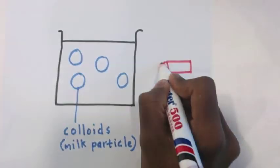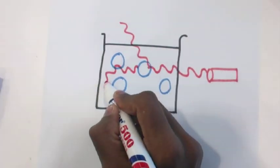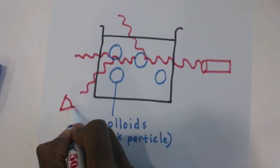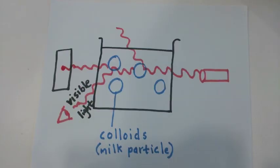Again, we point the laser towards the beaker which is now filled with milk and water. As the light travels through the solution, it is seen by the naked eye and, of course, the camera.